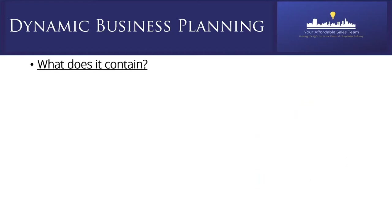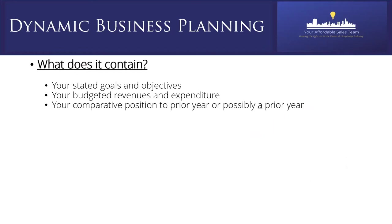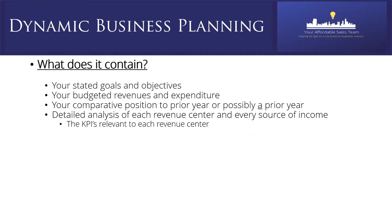What does a business plan contain? It will vary from property to property and business to business, but at the very least it should include: your stated goals and objectives, budgeted revenues and expenditure, your comparative position to prior year — though 2020 would not be the best benchmark — and detailed analysis of each revenue centre, each source of income, and the KPIs relevant to those revenue centres.